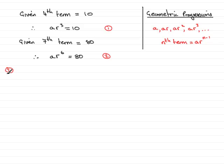If I say 2 divided by 1 gives, what we have is from 2, AR to the 6, divided by the AR cubed is going to be equal to 80 divided by the 10.